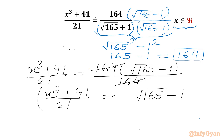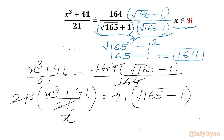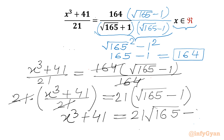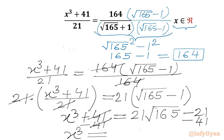Now we will multiply both sides by 21. So 21 cancels from the LHS and we get x³ + 41 = 21√165 − 21. Let us subtract 41 from both sides, giving x³ = 21√165 − 62.